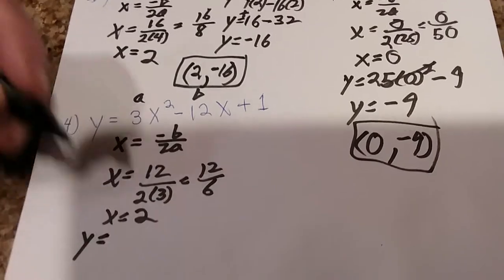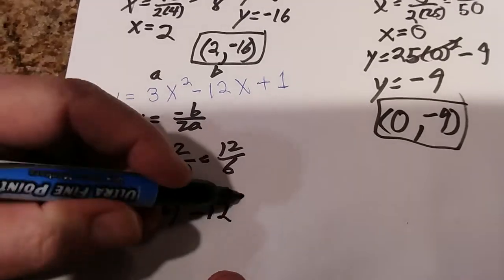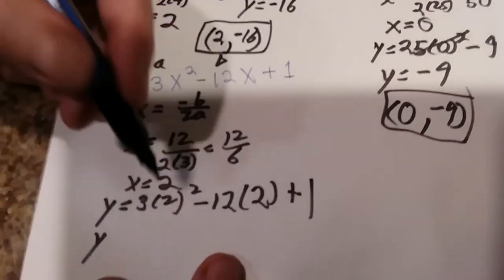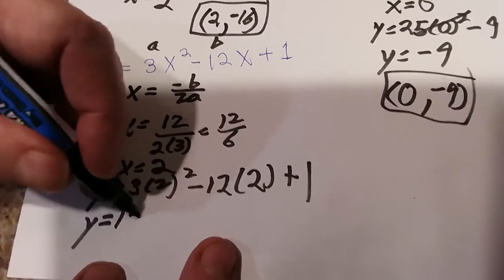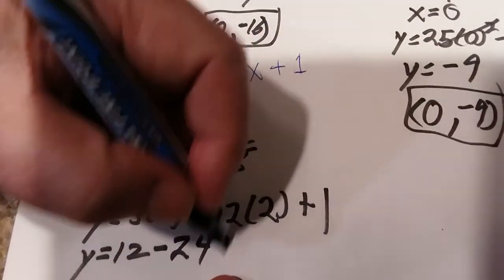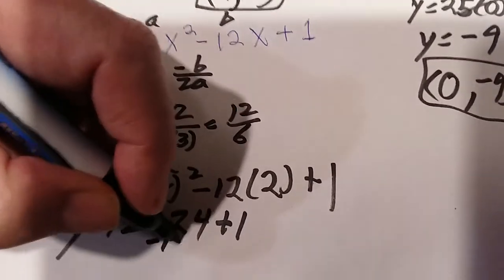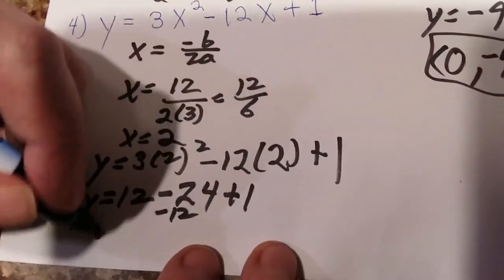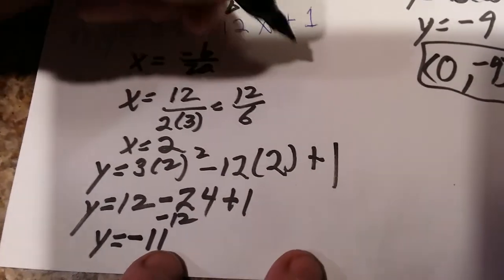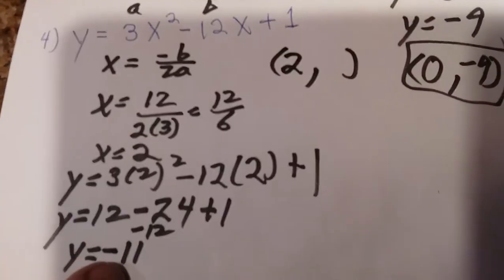To get the y-value, substitute x = 2 into the equation: 3(2²) - 12(2) + 1. Using order of operations, square first: 2² = 4, then 4 × 3 = 12. Next, 12 × 2 = 24, and bring down the +1. Now 12 - 24 gives -12 — unlike signs, subtract and keep the sign of the larger. Then -12 + 1 is -11. So the vertex is (2, -11).